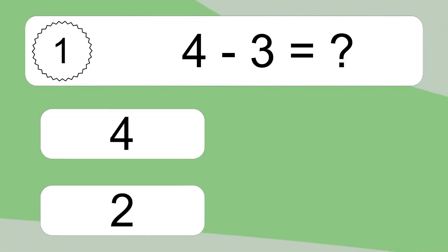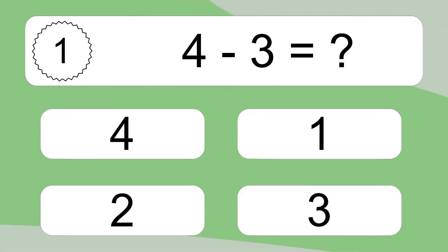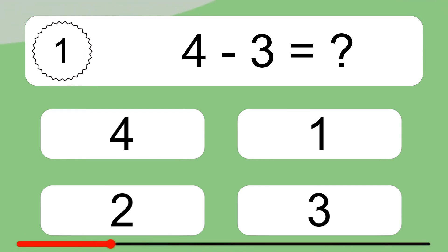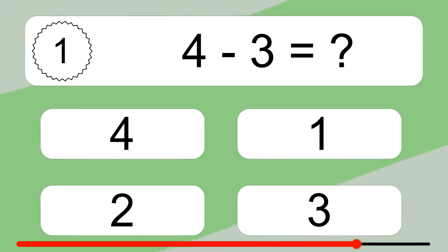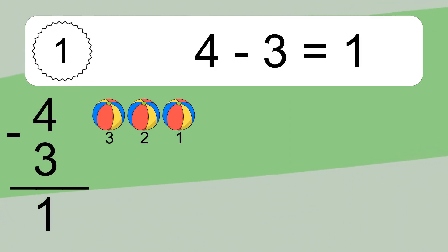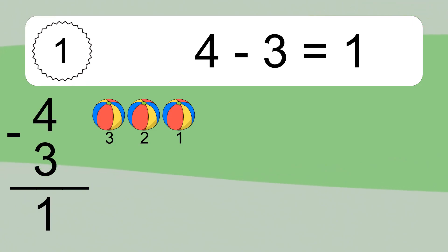4 minus 3 equals what? 4 minus 3 equals 1. Let's count it: 3, 2, 1.